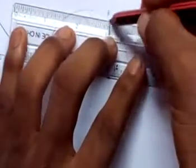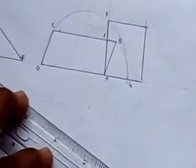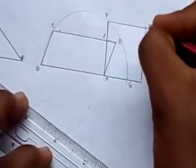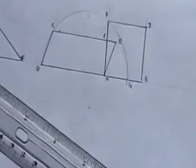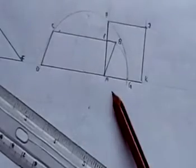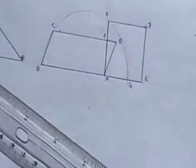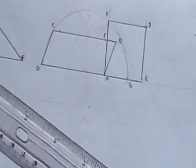Now let's call this J and this K. So this square AHJK is our required square, and it is equal in area to the parallelogram ABCD.